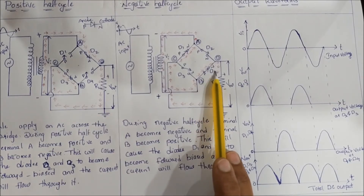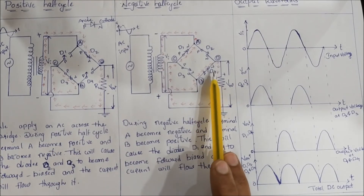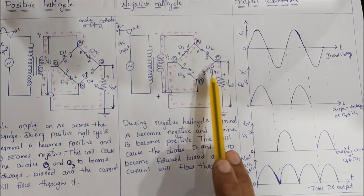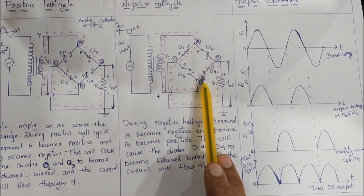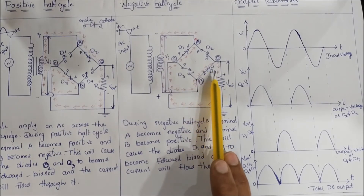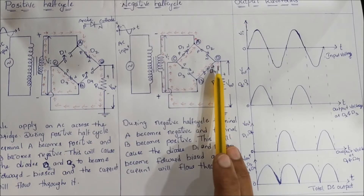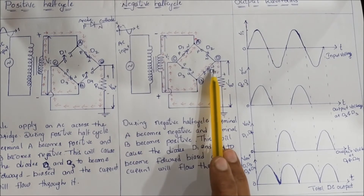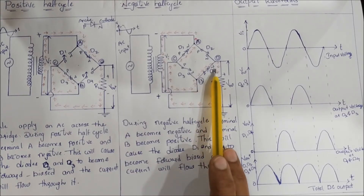Next, diode D4. Diode D4 is forward biased because terminal B is positive and D4's anode terminal is connected to the positive terminal. So D4 is forward biased and conducting.